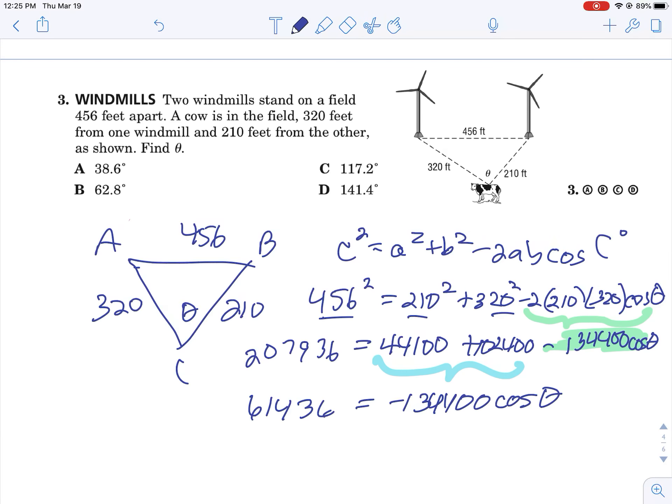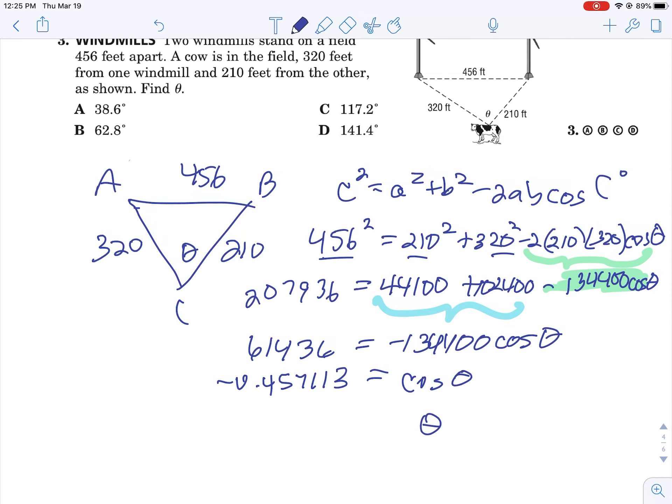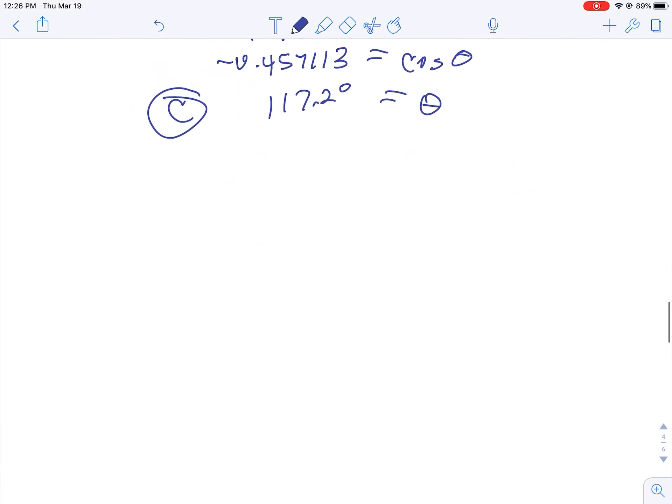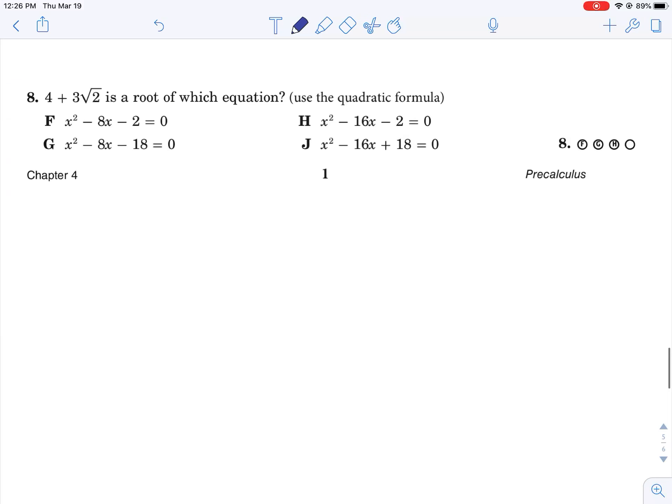We're going to divide both sides by negative 134,400. We get cosine of theta equals negative 0.457113, which makes theta 107.2 degrees. So law of cosines is what you're going to use. Now let's talk about number 8.